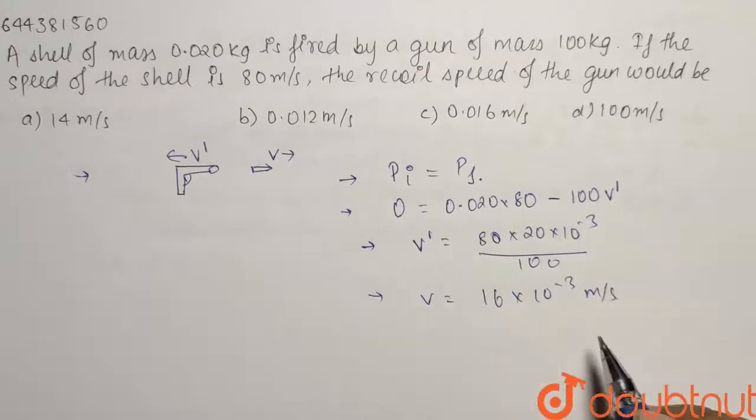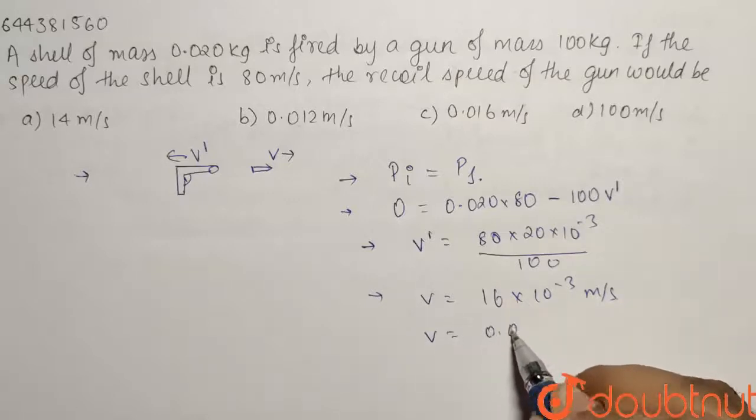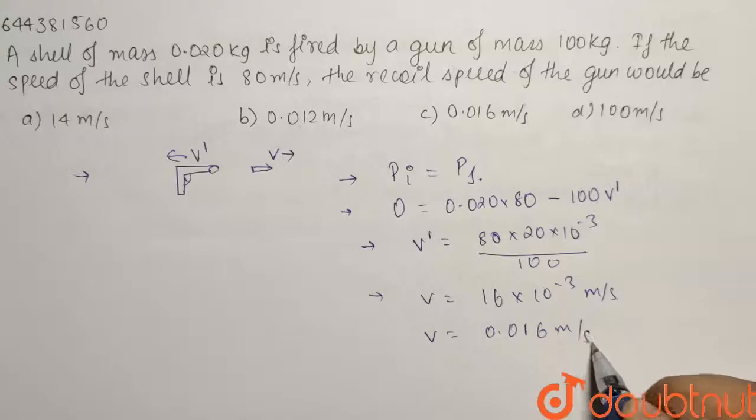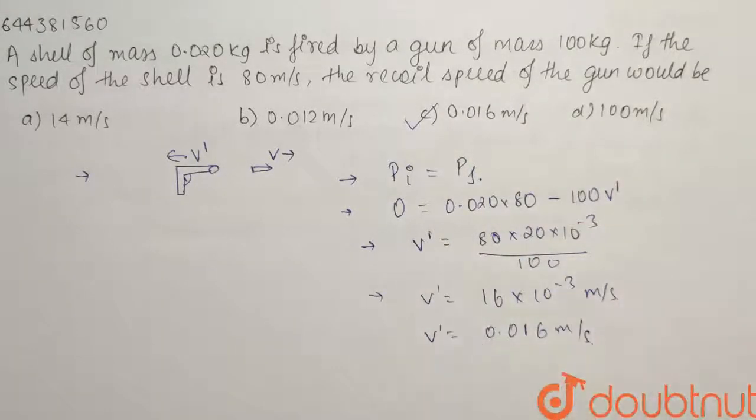So if we have a look at the given options, our option C, that is the velocity will be equals to 0.016 meter per second. So for the given question our option C is going to be the right answer. Thank you.